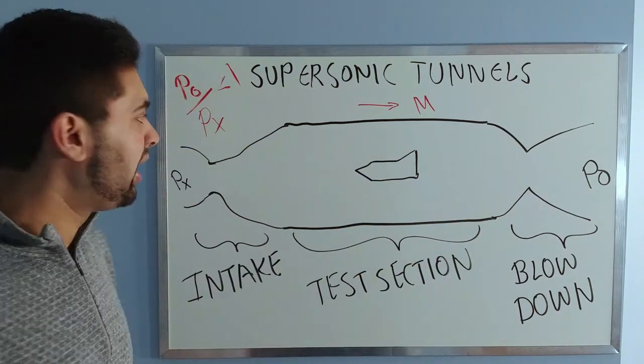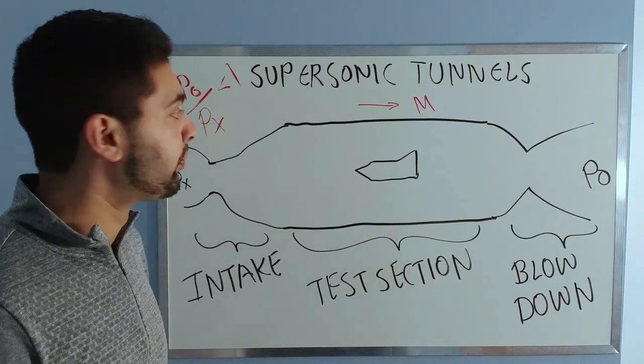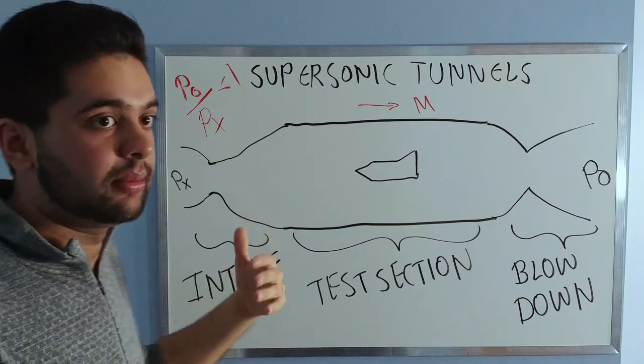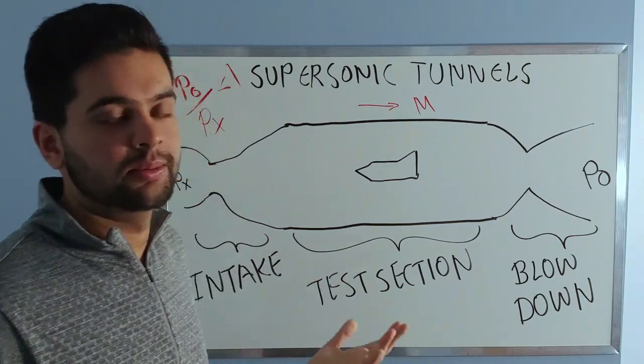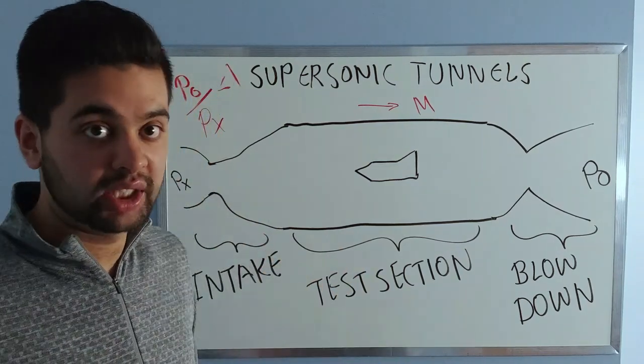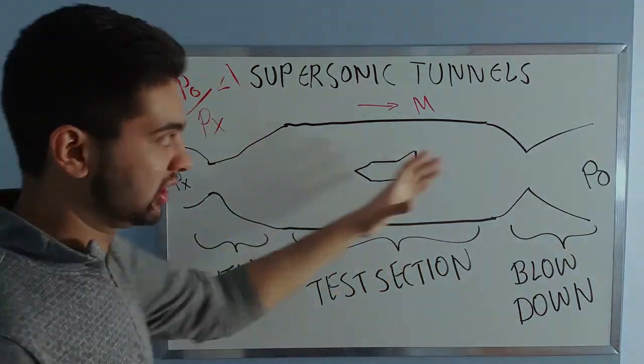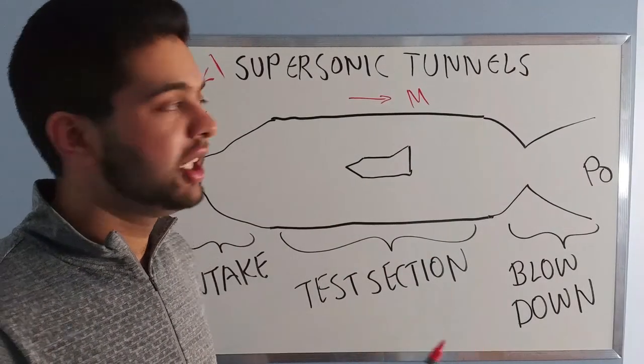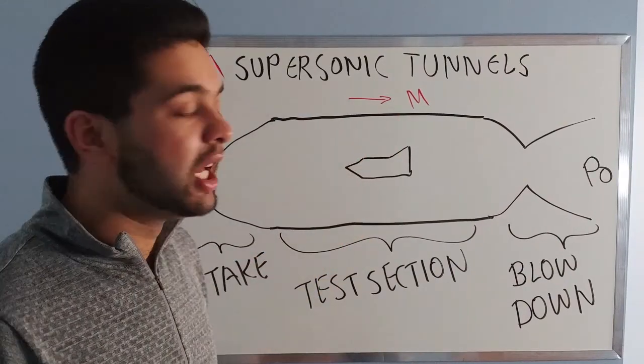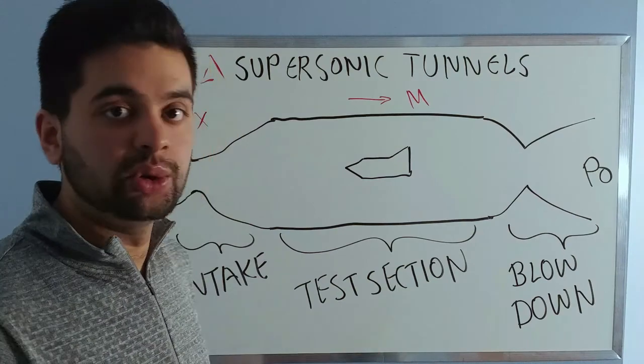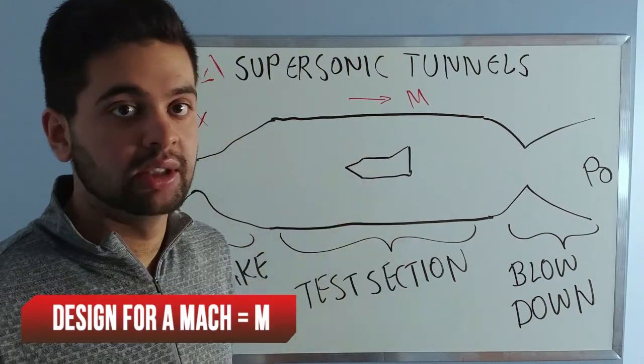Initially you will have subsonic flow everywhere because the pressure ratio is not too high. If you want to understand this in more detail, watch my part two video on how rocket engine nozzles work. When you have subsonic flow everywhere, this Mach number cannot be reached, and this wind tunnel is designed to achieve a specific Mach number here at the test section.